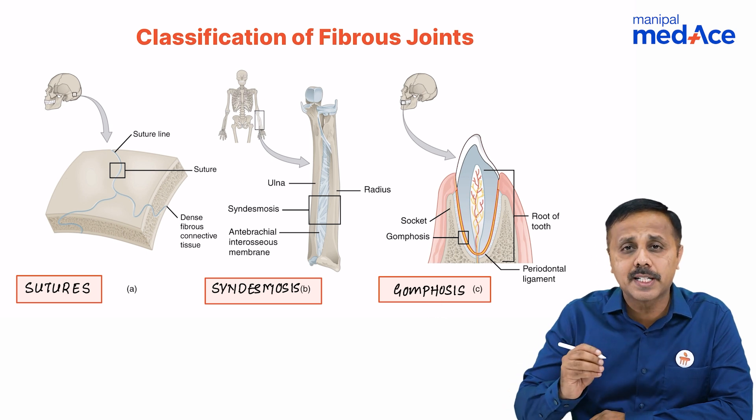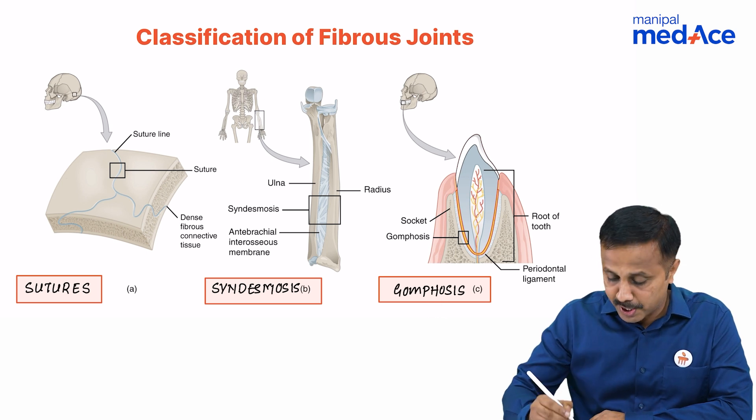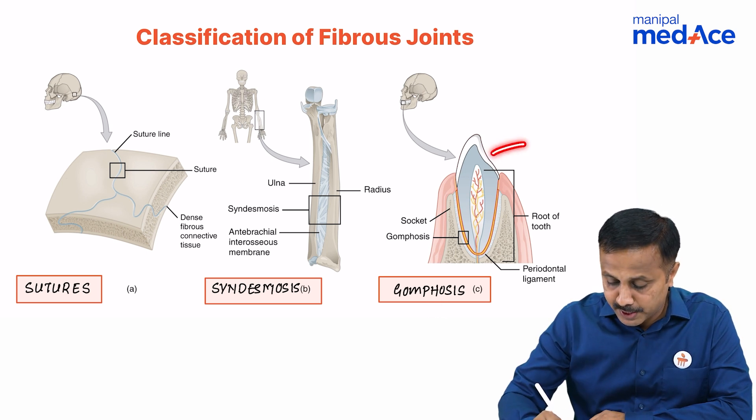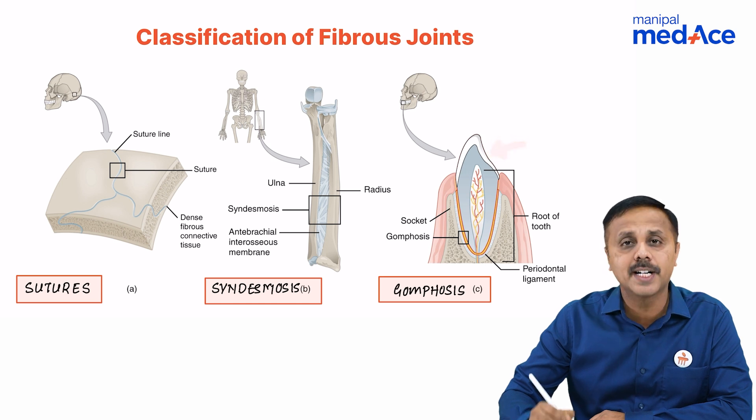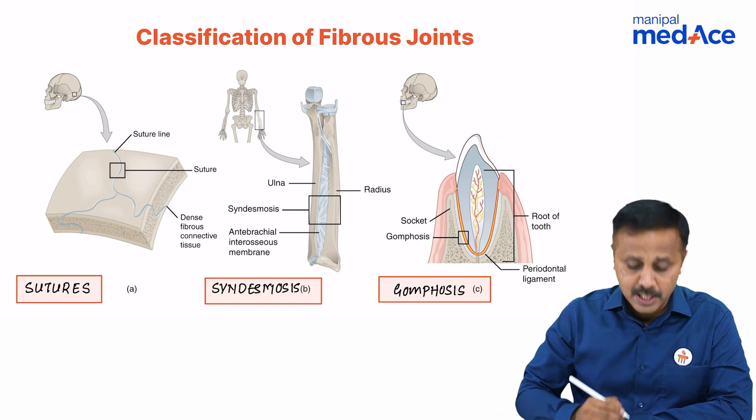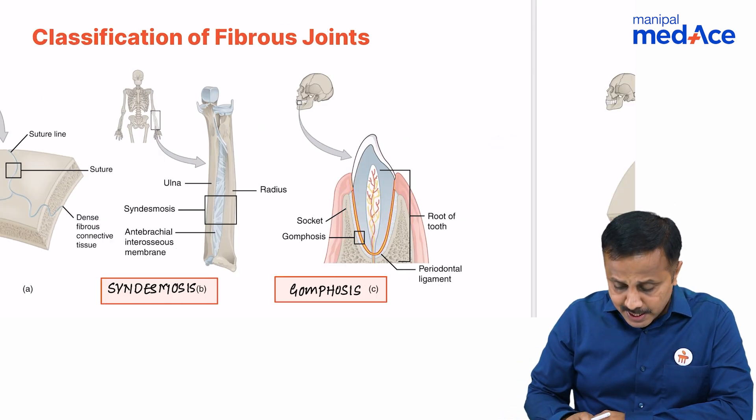Gomphoses refers to a special type of fibrous joint which is found between the tooth and its socket.